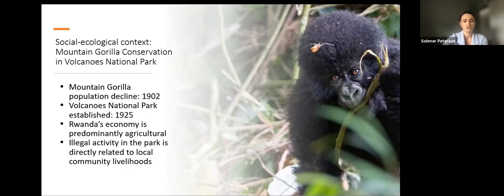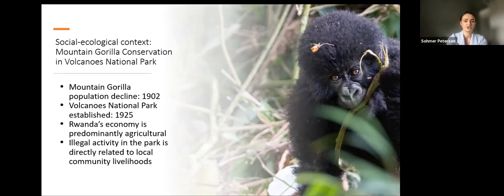It was through a socio-ecological lens that conservationists discovered the connection between illegal activity and the livelihoods of communities living near park borders. The national park is surrounded by a dense population of subsistence farmers living in extreme poverty with few alternative income sources. Despite strict anti-poaching enforcement, illegal activity remains a major issue today, including hunting for bushmeat, harvesting craft and medicinal materials, and firewood collection.